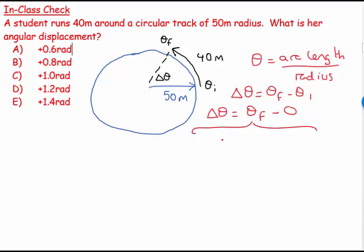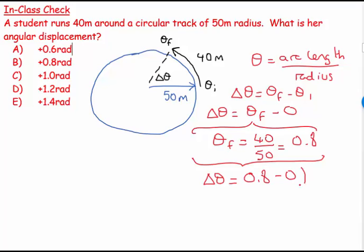We can say, well, Theta F in this case is equal to arc length, which is 40, divided by our radius, which is 50, which is 0.8. So having found that, we can say our angular displacement is equal to 0.8 minus 0 radians. So my angular displacement is equal to 0.8 radians.